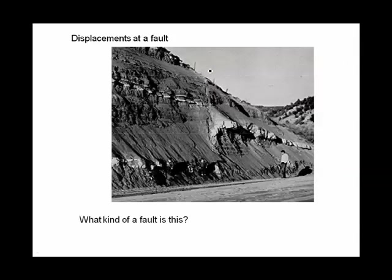Here's the fault line. You can even see that this rock layer started to bend and then gave up and just broke. There is downward movement along this side. It's almost a vertical fault, so it's hard to figure out exactly what it is, but it would be a normal fault.